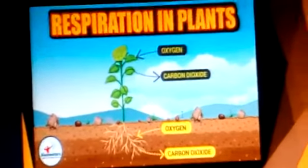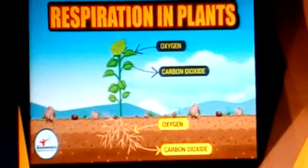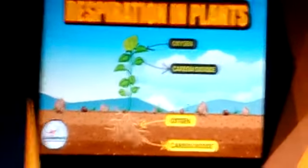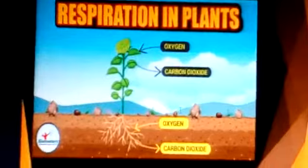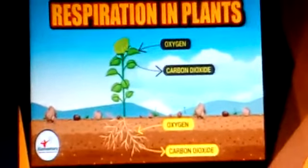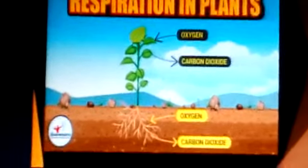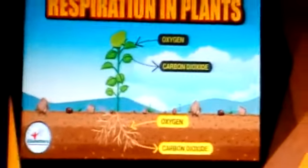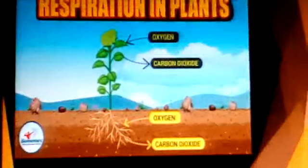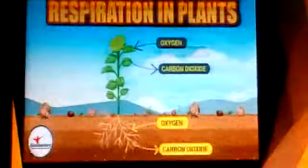How do plants respire? Like other living organisms, plants also respire for their survival. They take in oxygen from the air and give out carbon dioxide. In the cells, oxygen is used to break down glucose into carbon dioxide and water, as in other organisms.